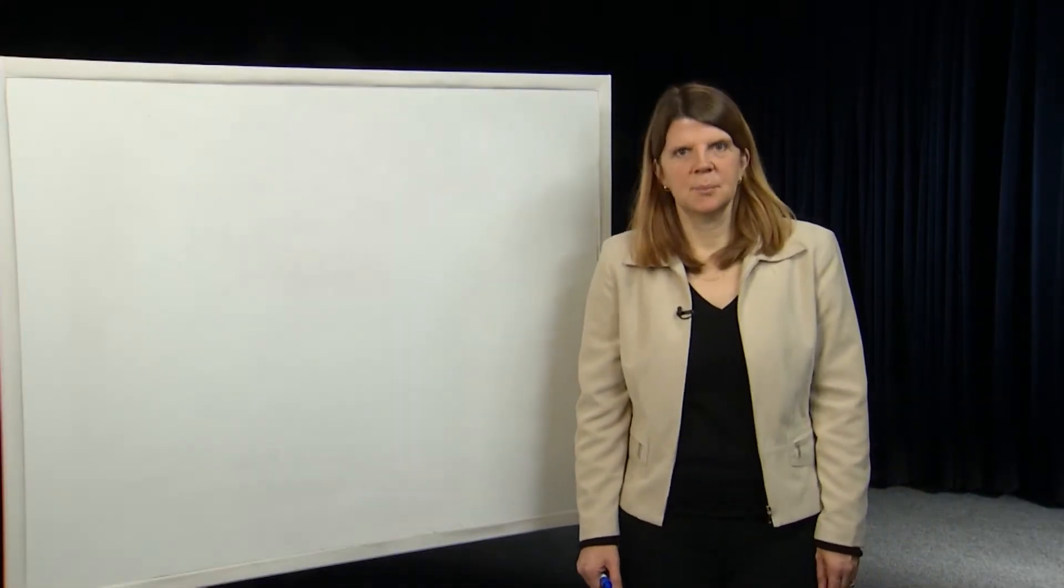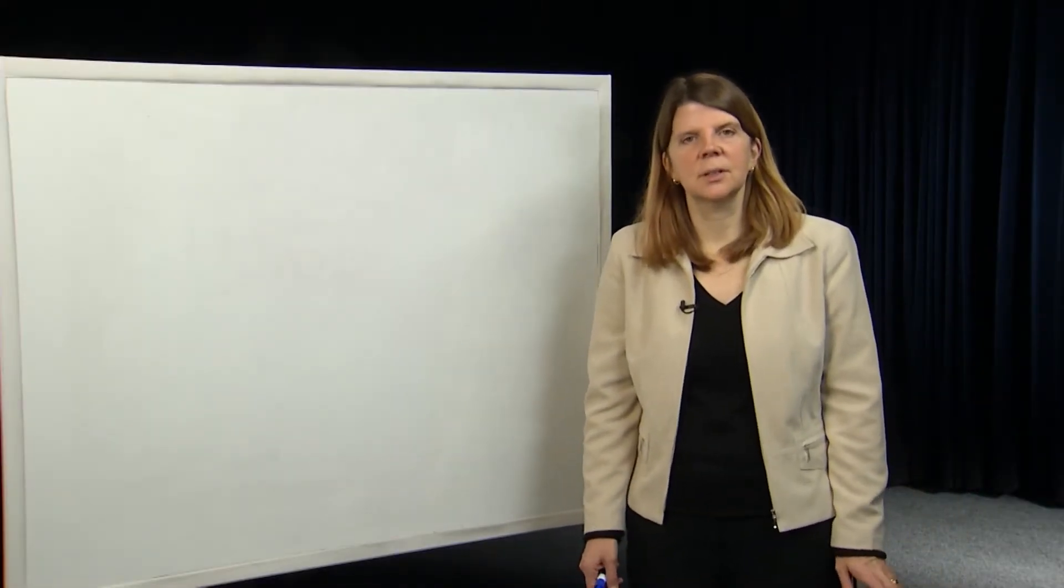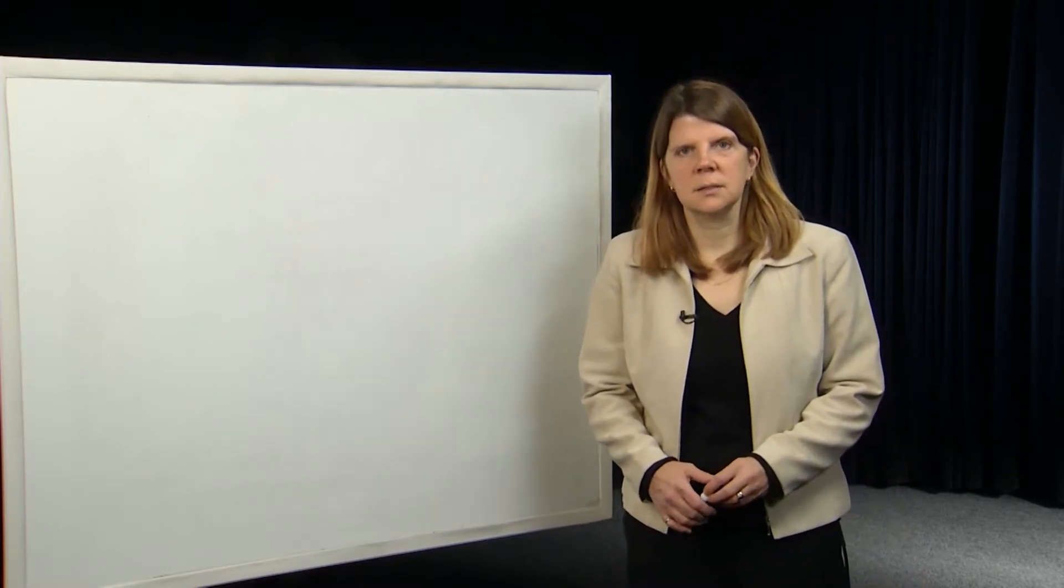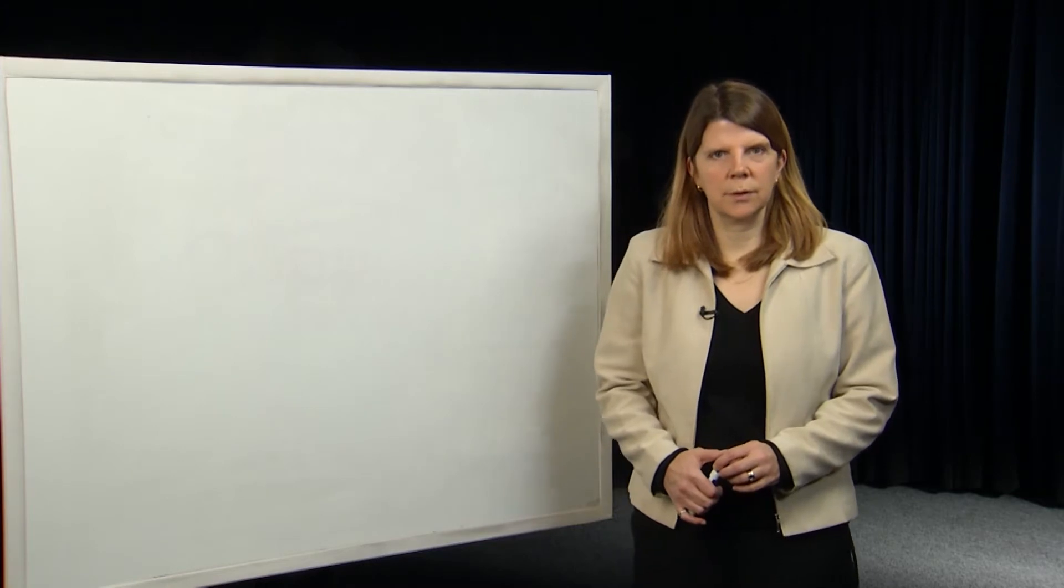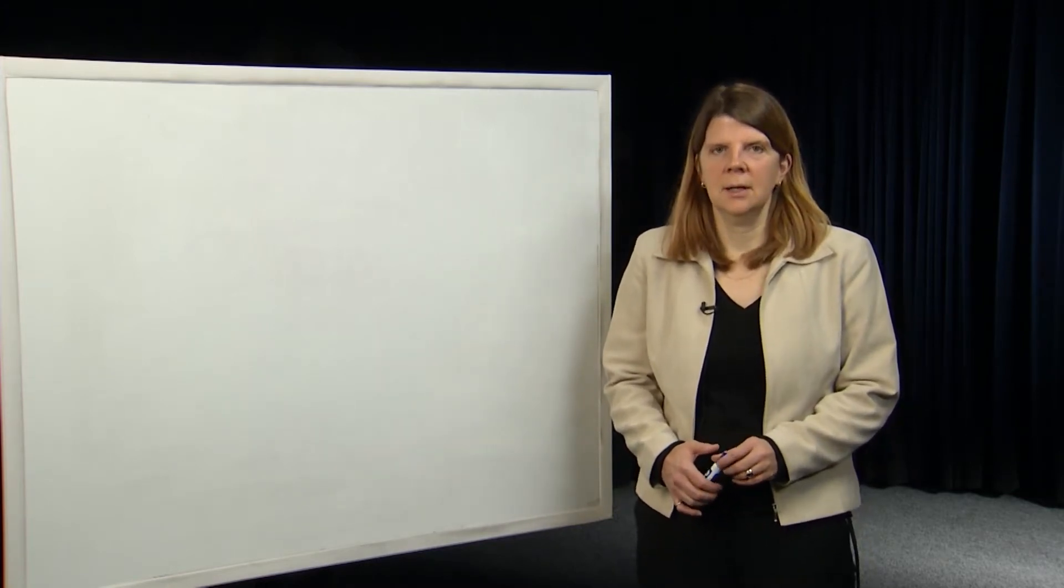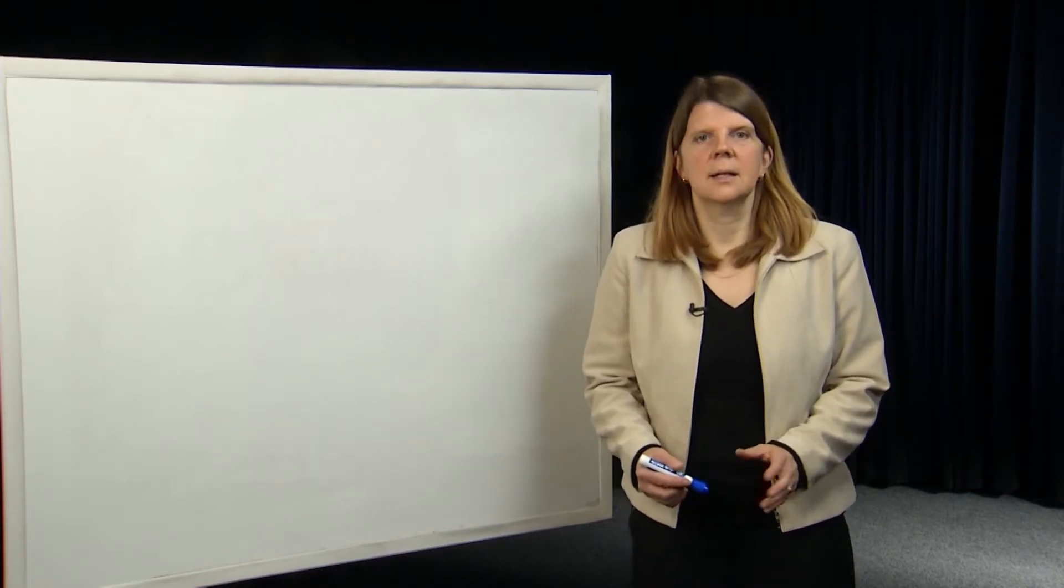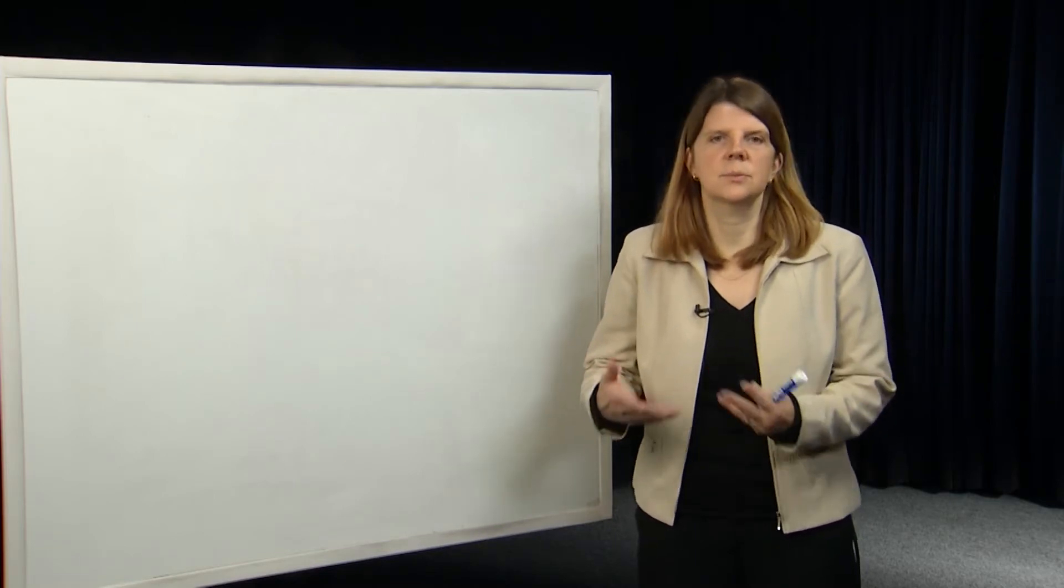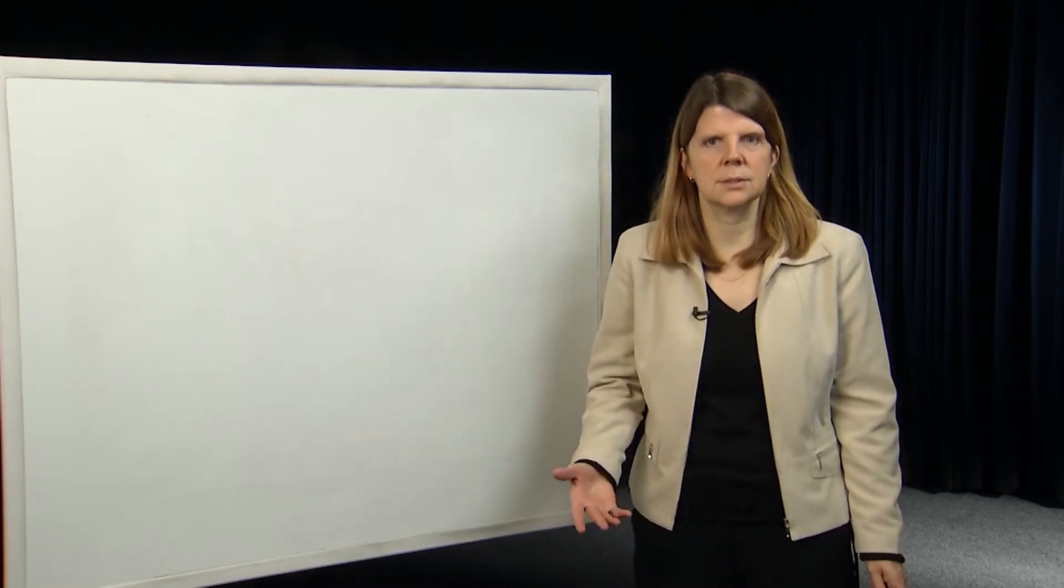Hi, my name is Claire Tomlin. I'm a professor of Electrical Engineering and Computer Sciences at Berkeley. And this is module 24 in a series that we're recording to support the course EECS 221A, Linear System Theory at Berkeley. In this module, we're going to talk about diagonalization of a matrix and how it's used in systems theory, how it makes analysis of a system easier.